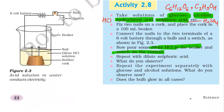Then repeat this activity with dilute sulfuric acid. After filling the beaker with dilute HCl, the switch is closed and the circuit is complete. What do you observe? We will see that the bulb will glow. With hydrochloric acid the bulb will glow, and with dilute sulfuric acid also the bulb will glow.